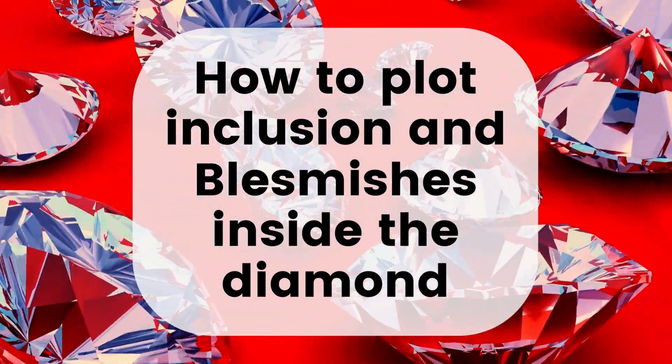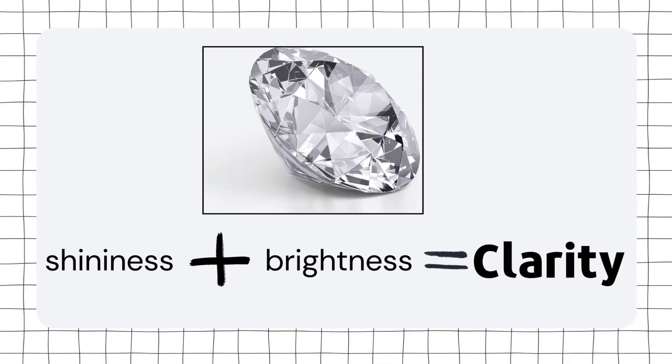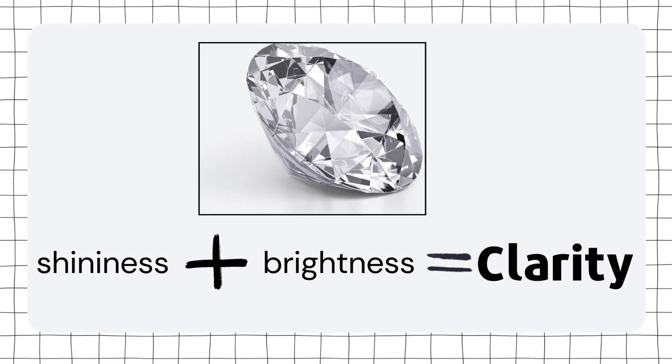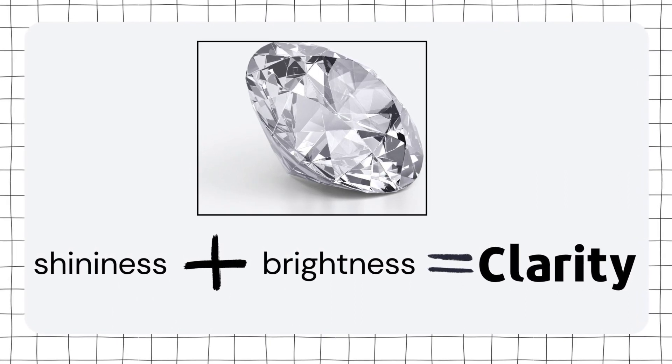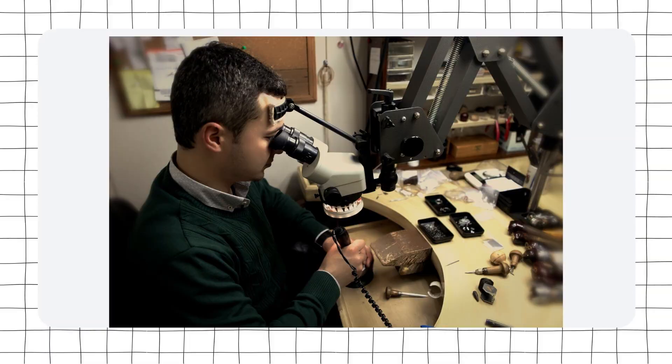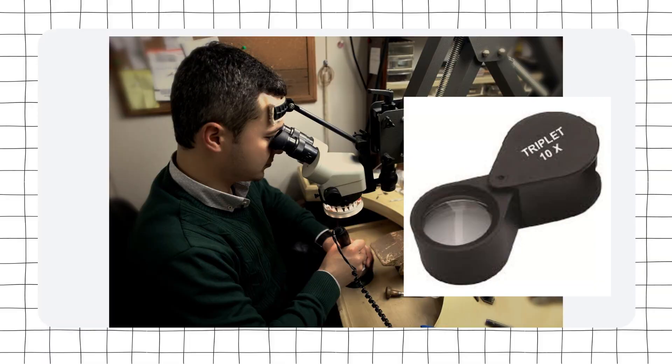In the previous video, we saw what clarity is. Clarity is basically the shininess and brightness of a diamond and how glittery the stone looks. And how exactly do we get this high amount of clarity? When there are no inclusions or blemishes present inside a stone, we get very good clarity. But how exactly do we know what the inclusions are and how they are present? Obviously, through looking through a microscope and a loupe and everything.